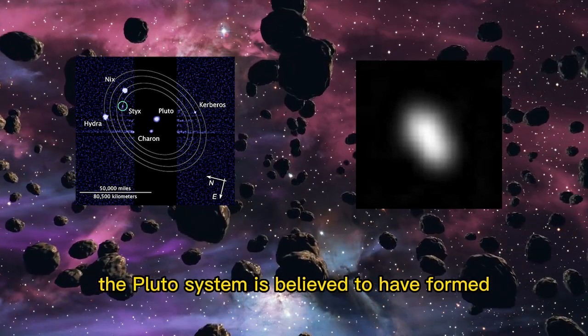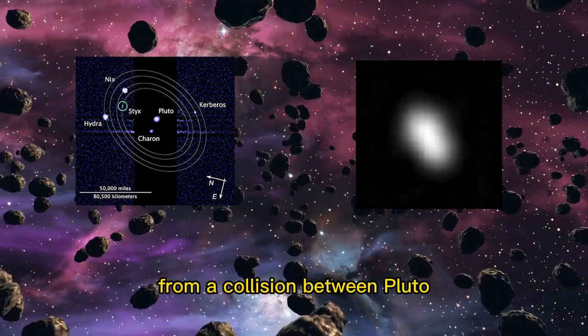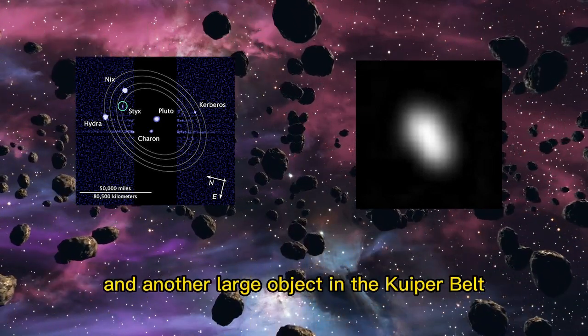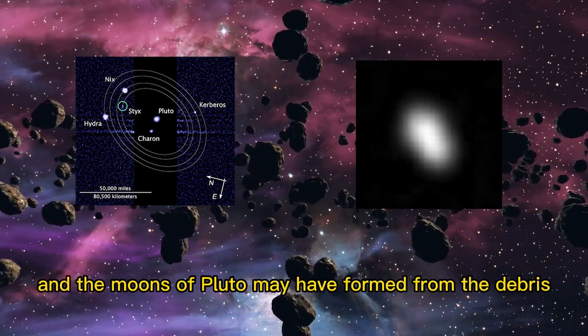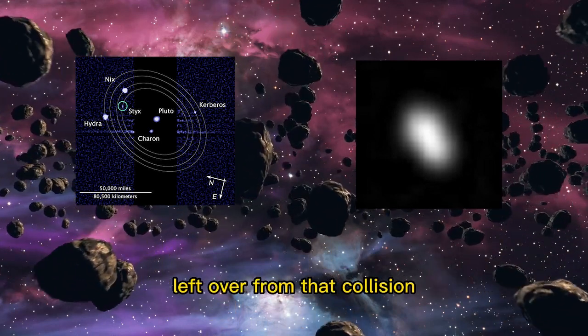The Pluto system is believed to have formed from a collision between Pluto and another large object in the Kuiper belt, and the moons of Pluto may have formed from the debris left over from that collision.